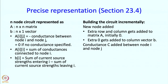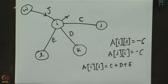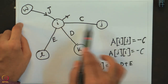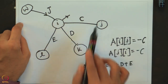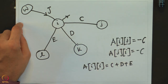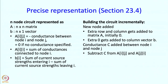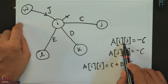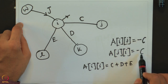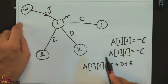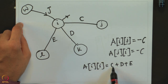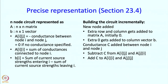What happens if a conductance C is added between nodes i and j? A[i][j] should be -C, so we subtract C from A[i][j] — which was originally 0. Similarly A[j][i] gets subtracted by C. And C must also appear in the diagonal: to A[i][i] and A[j][j] we add C. That is how adding a conductance gets reflected in our data structure.